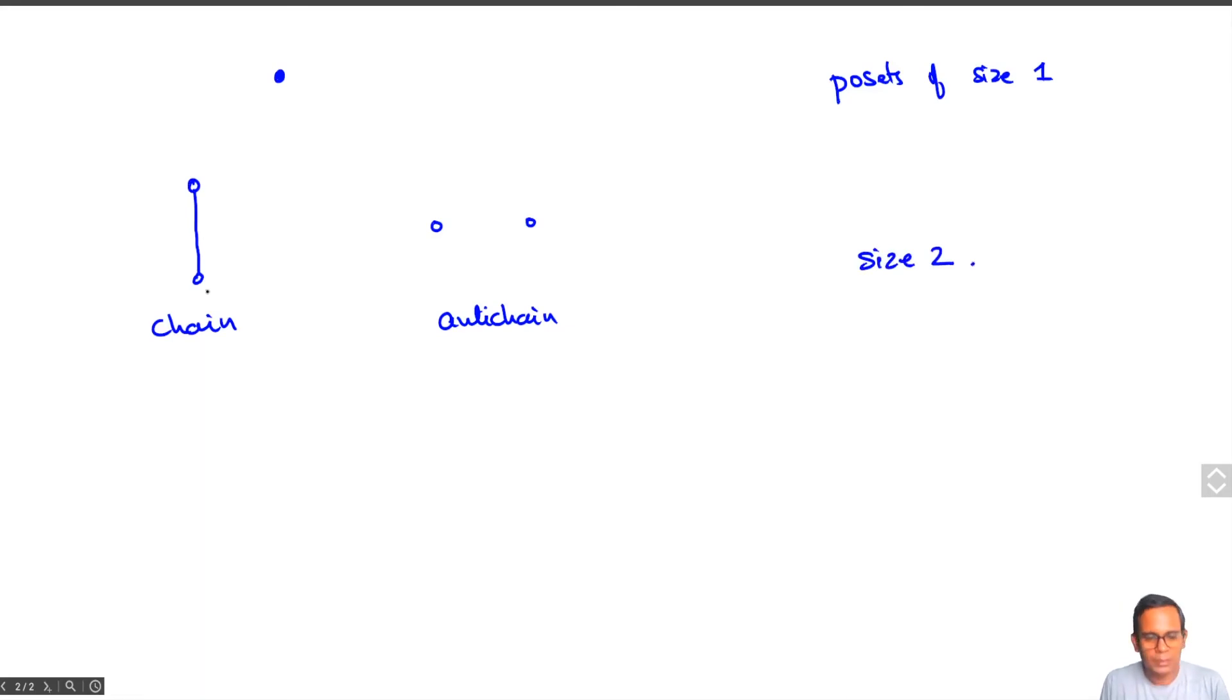You could think of these points as different things. Sometimes you could think of one, two, you could think of two, three, and so on. But it doesn't matter. You get isomorphic posets. So the Hasse diagram of a finite poset captures the poset up to isomorphism.